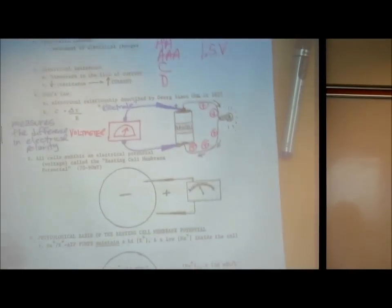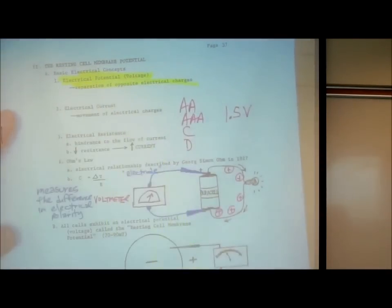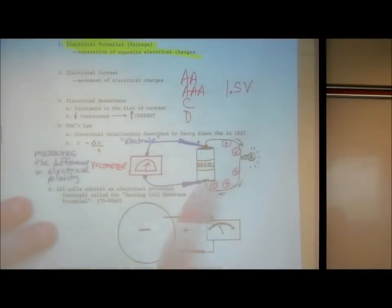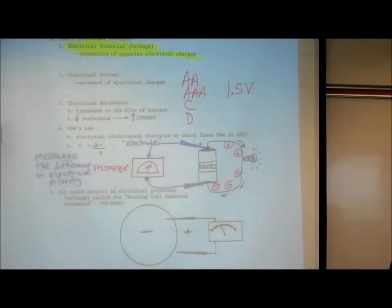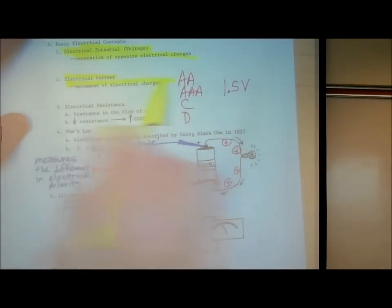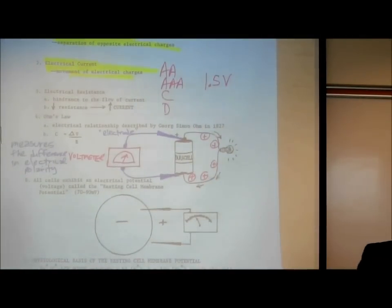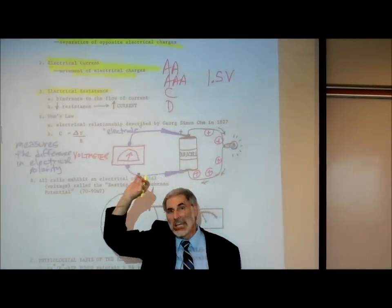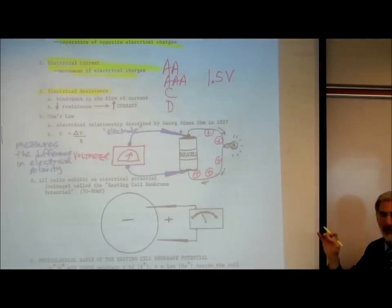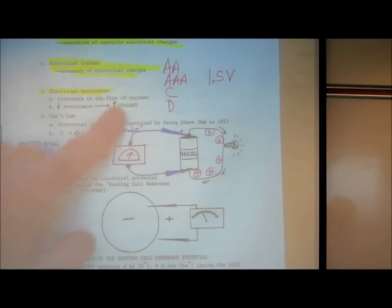We've been talking about three electrical concepts. First, electrical potential or voltage — that's a separation of opposite electrical charges, which is what we find in a battery. Second, electrical current — when electrical charges move, that's called an electrical current. Third, electrical resistance — what prevents or hinders an electrical current, hindering the flow of electrical charges. If you increase electrical resistance, you reduce electrical current; if you reduce resistance, you increase current.